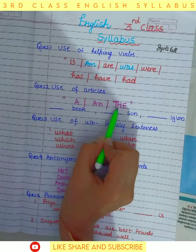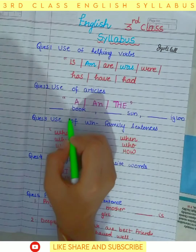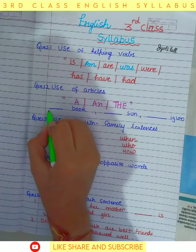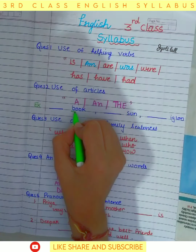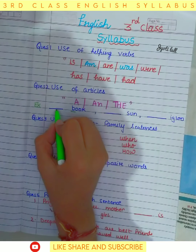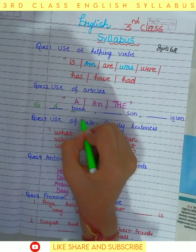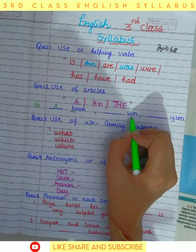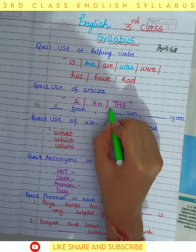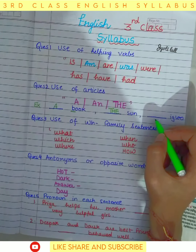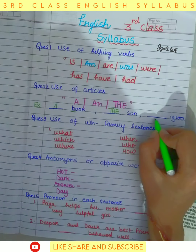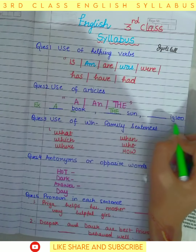The next question is the use of articles. There are three articles we use: a, an, and the. How to use 'a' — when the word starts with a consonant, we use 'a'. For example, 'a book' because B is a consonant. For specific things, we use 'the', like the sun, the India Gate, the Ganga.